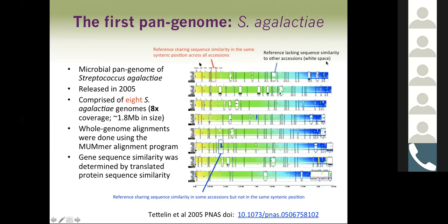You'll see eight panels here, and each panel represents a case where one of the eight genomes was used as the reference in comparison to the others. The colors represent the coordinates from the beginning to the end of the chromosome — yellow is the beginning, dark blue is the end. Colored spaces in the same region represent the reference sharing sequence similarity in the same syntenic position. White indicates the reference lacking sequence similarity to other accessions, and different colors indicate similarity in some accessions but not in the same syntenic position.